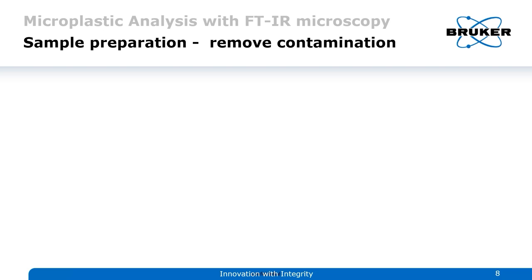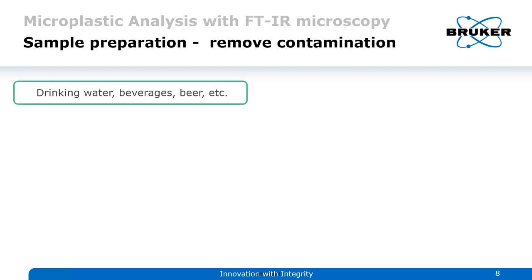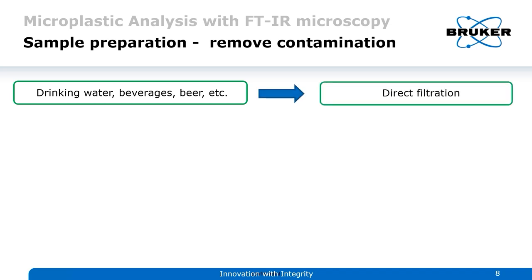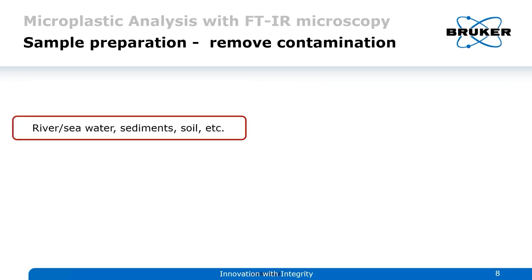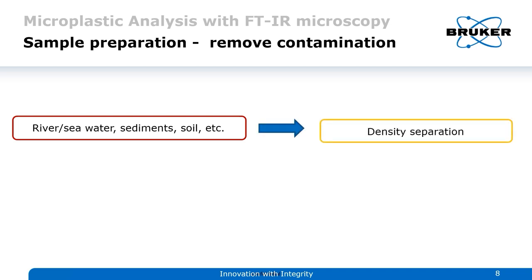For sample preparation and removing contamination: for drinking water, beverages, beer — anything like this — you can directly filter it, wash the filter to remove remains of the original liquid, let it dry, and measure it. If you have something like river or seawater sediments — more complex samples with a lot of soil or sand — you'll need to do a density separation to remove all of that and just get the plastic particles.